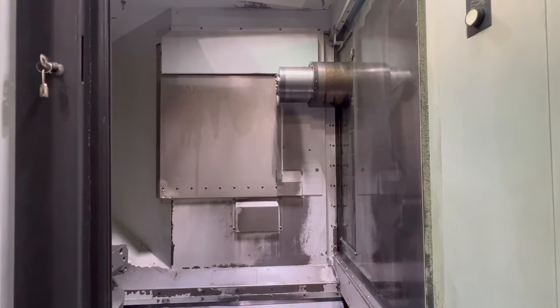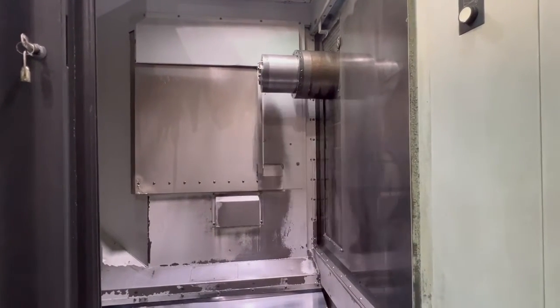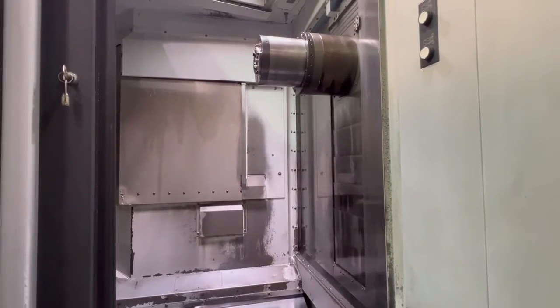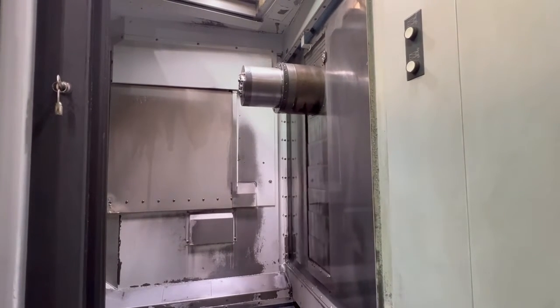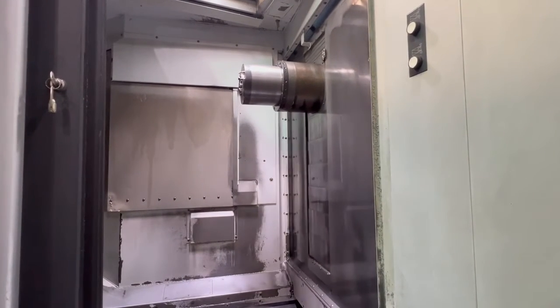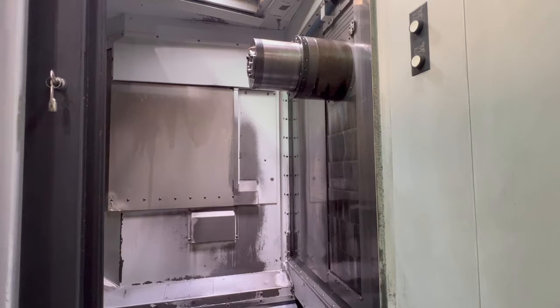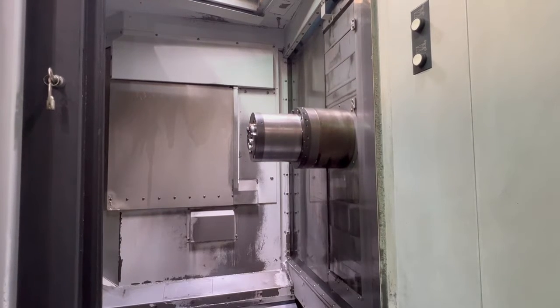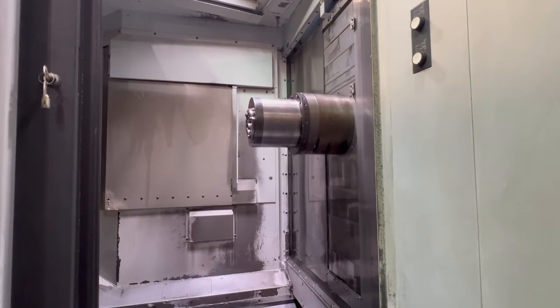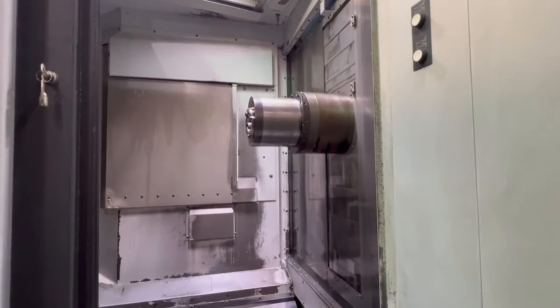Machine's got a CAT40, 60 ATC. You have a 500 millimeter or 19.7 by 19.7 inch pallet, 28.7 inches of X travel, 28.7 of Y, and 33.5 of Z.